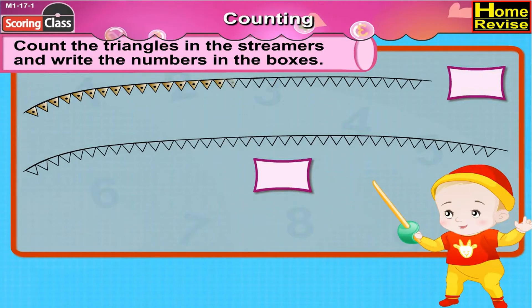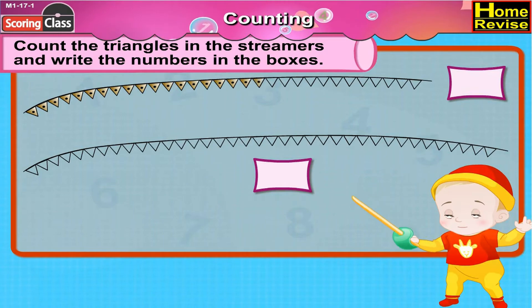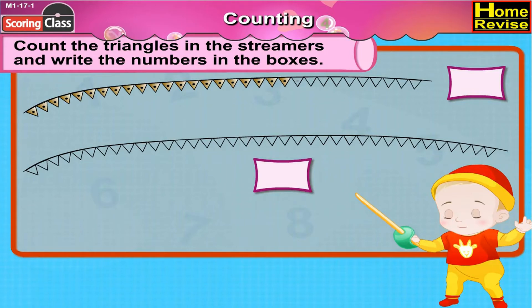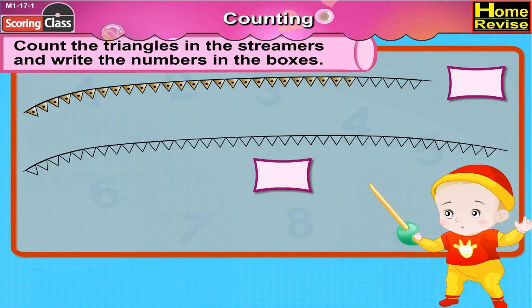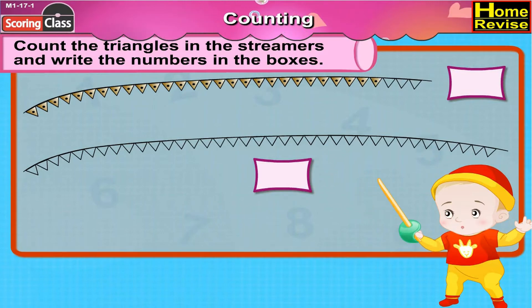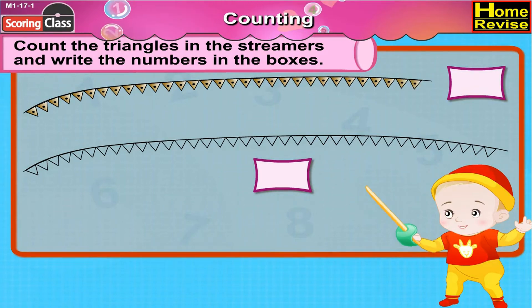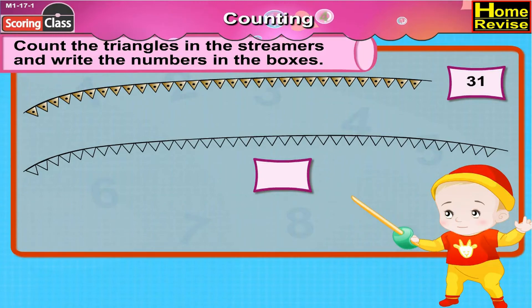Let's do it! 17, 18, 19, 20, 21, 22, 23, 24, 25, 26, 27, 28, 29, 30, 31. So, there are 31 triangles in the first streamer.